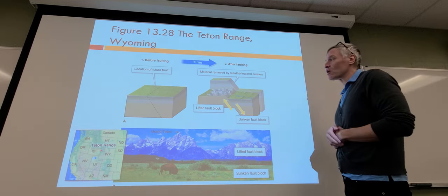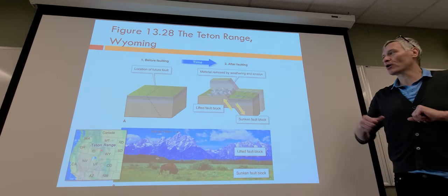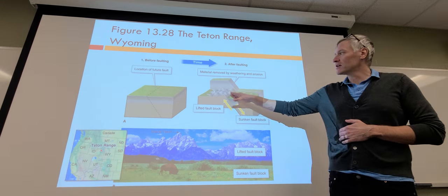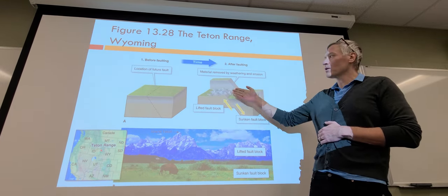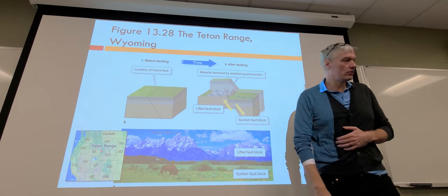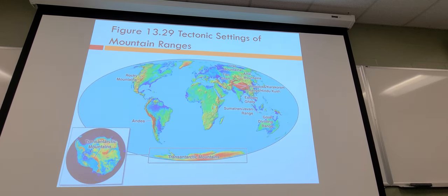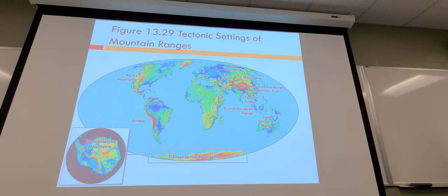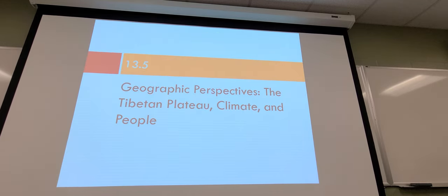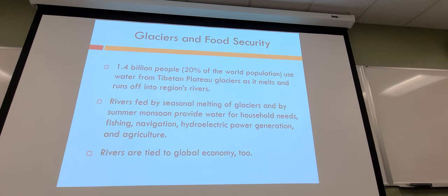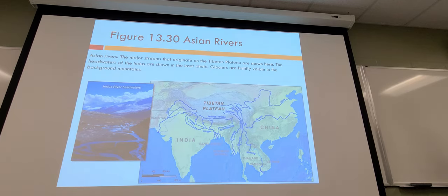The Grand Tetons in Wyoming are an example of rift landforms. When land is pulling apart, parts settle in, and if still above the water table, it creates a mountain range that looks much bigger on one side than the other because the land has sunken down. Orogeny is basically the process of making mountains — usually through crust folding, crust coming together, and tectonic uplift that exceeds weathering. The Tibetan Plateau is a key example.